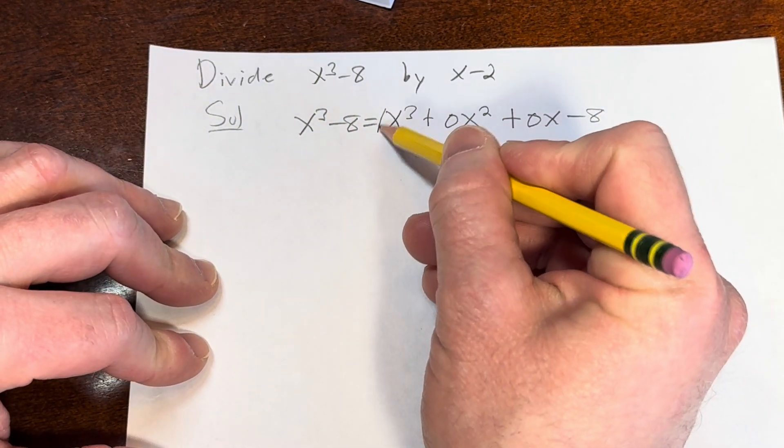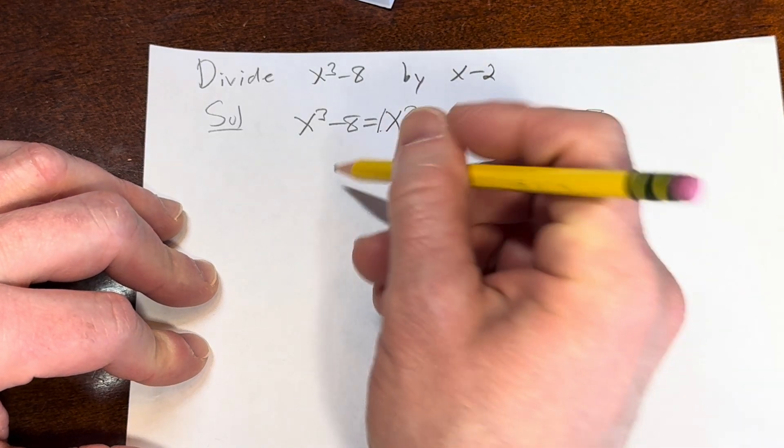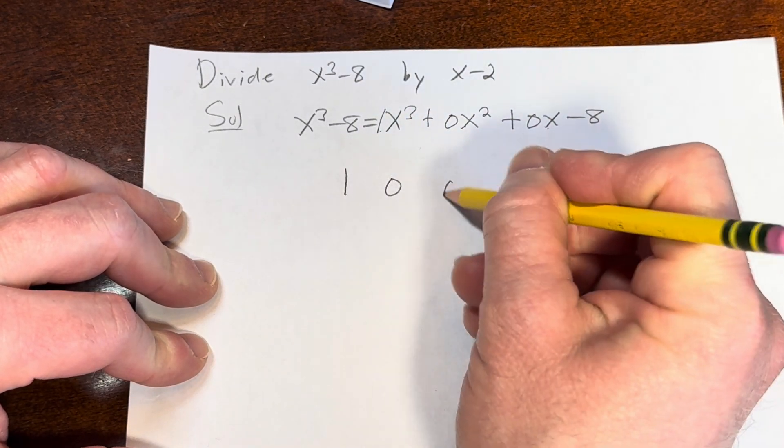So we'll write down the coefficients which are 1, 0, 0, negative 8.